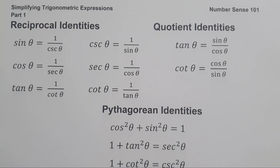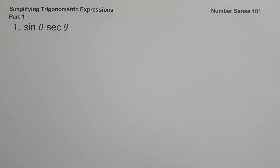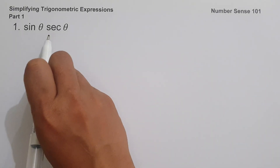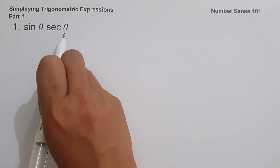Those are the different kinds of identities that you need to remember. Now let's start with example number one: simplify sine θ · sec θ.